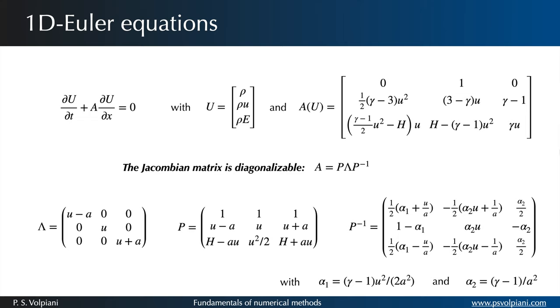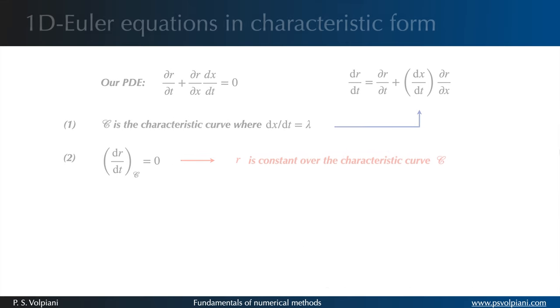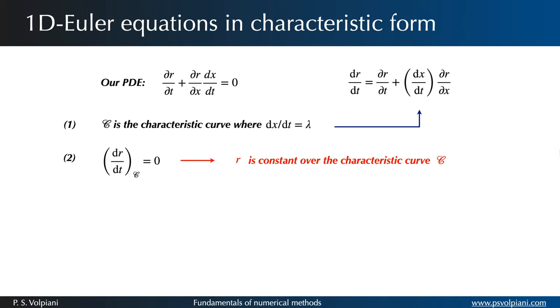Let's discuss now the Euler equations in characteristic form. The general form of the equation defining a characteristic curve is dx/dt equals lambda, where lambda is an eigenvalue of the Jacobian matrix A. An invariant is a quantity that is transported along a characteristic curve in the plane x-t and remains unchanged. Since the corresponding invariant is constant along the characteristic, it satisfies the following equation.